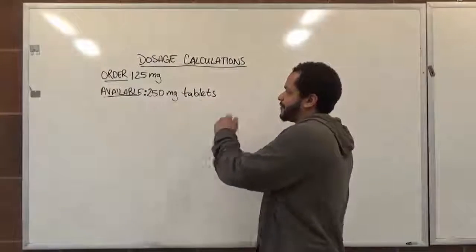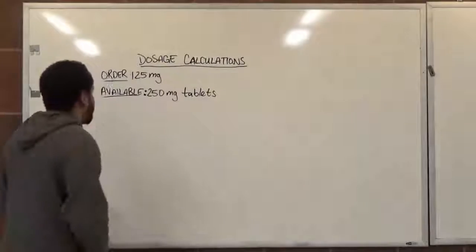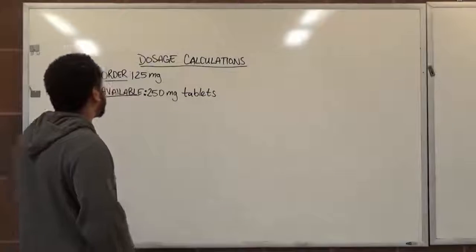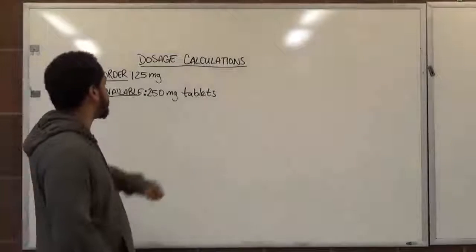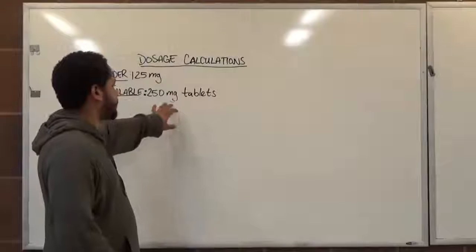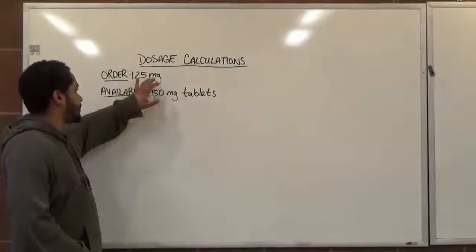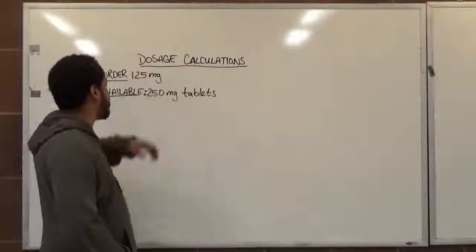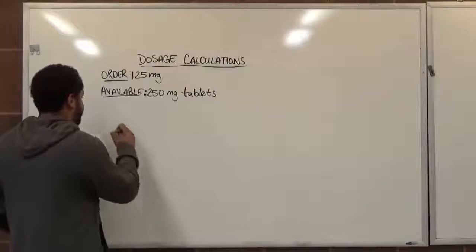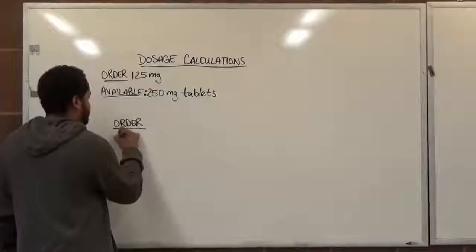In this case, we have an order of 125 milligrams of a drug to be given to a patient, and what's available is 250 milligram tablets. There are about three different ways we could do this particular problem, because we have milligrams and milligrams in our available substance. And so because we have the same dimension of weight, we can simply take what we have in our order and divide it directly with what's available.